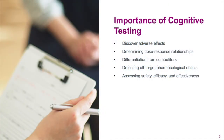Gathering information on the cognitive profile of a compound during clinical development can be informative for several reasons. For example, adverse effects on cognitive function might be important for determining dose-response relationships and selecting doses for later phase development, for differentiation from competitor drugs, for detecting off-target pharmacological effects, and also for assessing safety, efficacy, and effectiveness.